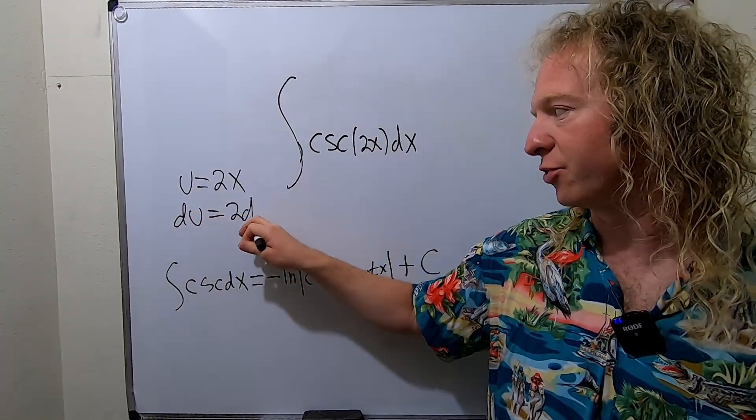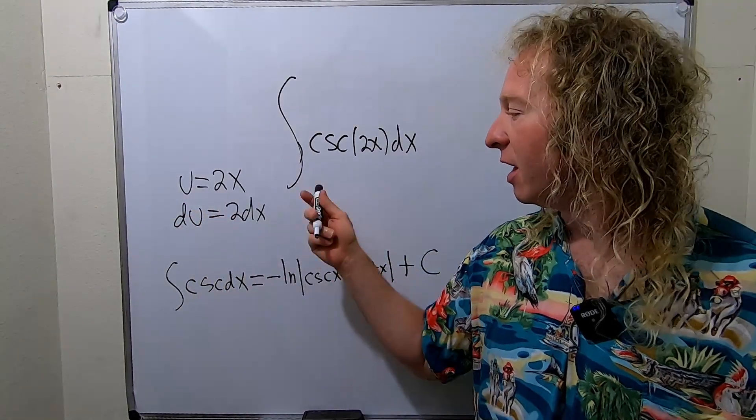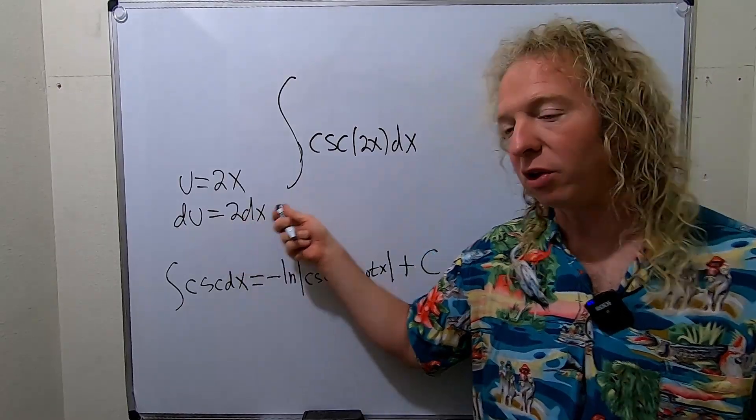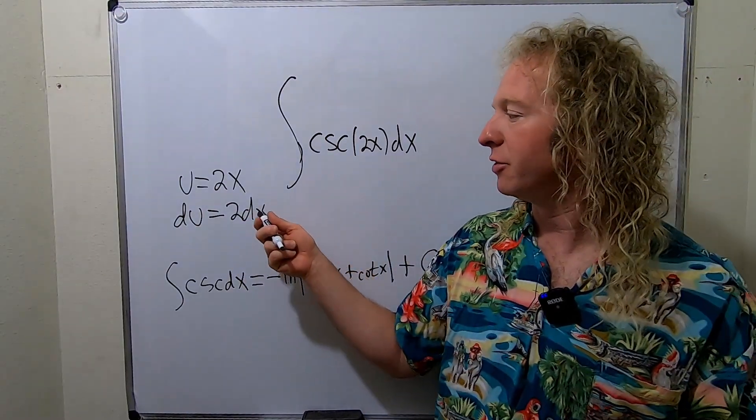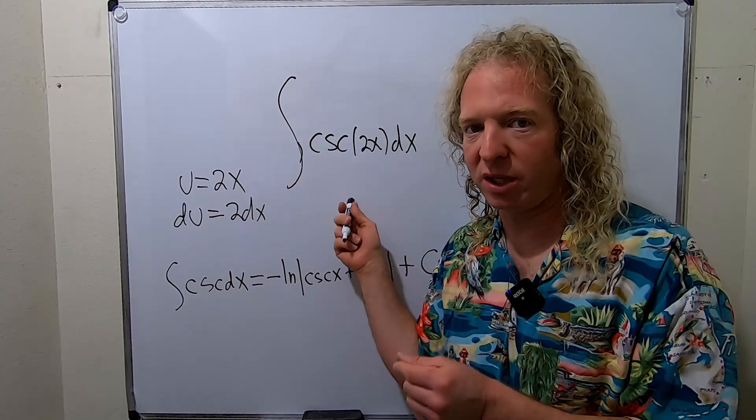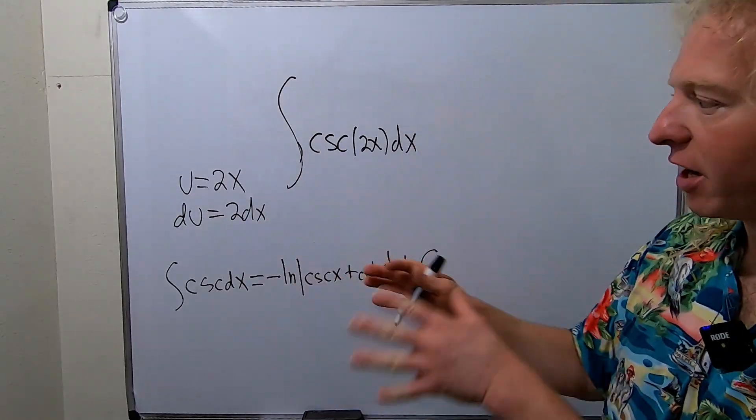Then we'll take the derivative, so du will be 2 dx, right? Because the derivative of x is just 1. Then you have to make this look like this, but there's a 2 here and there's not a 2 here.